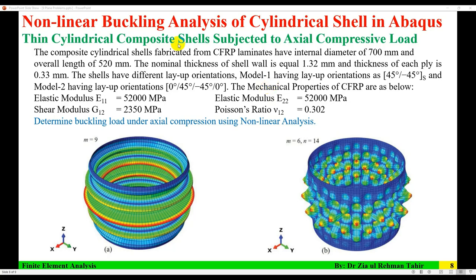The composite cylindrical shell is fabricated from carbon fiber reinforced plastic laminates, with an internal diameter of 700 mm and overall length of 520 mm. The nominal thickness of the shell wall is 1.32 mm and the thickness of each ply is 0.33 mm. The shells have different layup orientations. Model 1 has a layup orientation of plus 45, minus 45, symmetrical — that is plus 45, minus 45, plus 45, and minus 45. Model 2 has a layup orientation of 0, 45, minus 45, and 0.